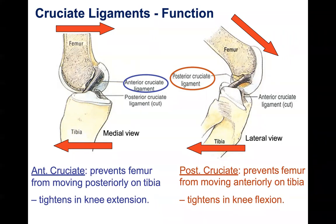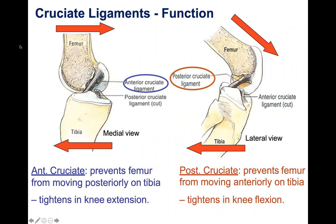Clinically, I use a drawer test to test these ligaments — an anterior drawer test and a posterior drawer test. For the anterior drawer test, I pull the tibia anteriorly while the client is on their back with their knee bent, to check the integrity of the ACL. We call it a drawer test because the way we pull on the tibia is like pulling on a drawer. I also do a posterior drawer test to check the integrity of the PCL.